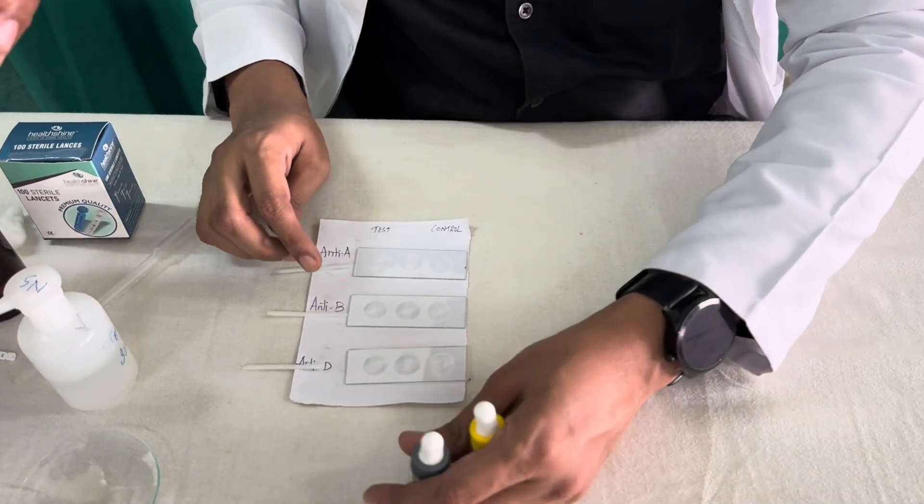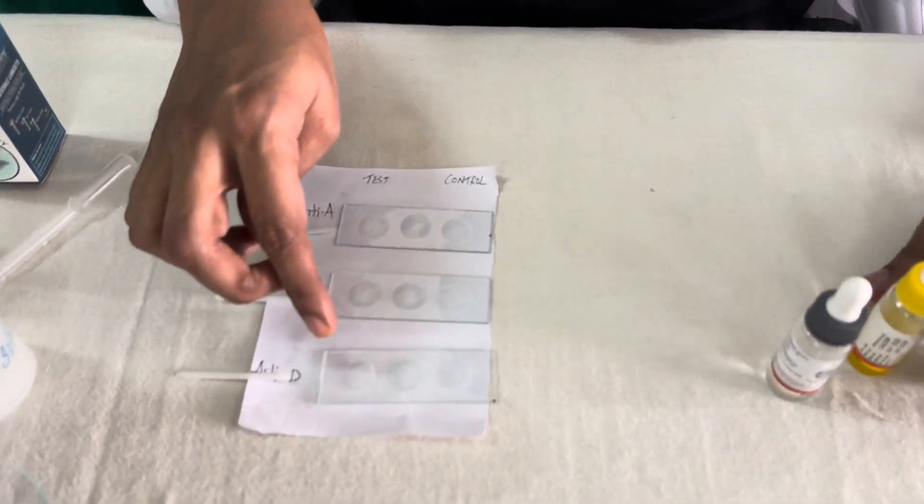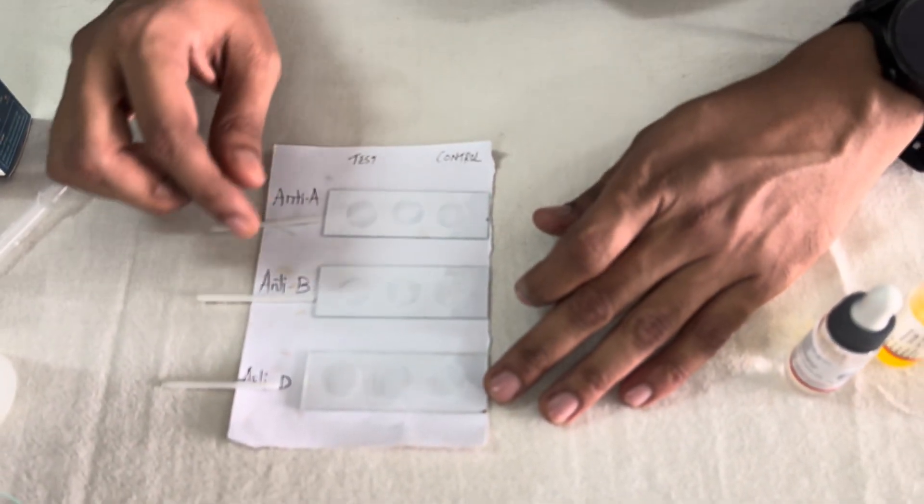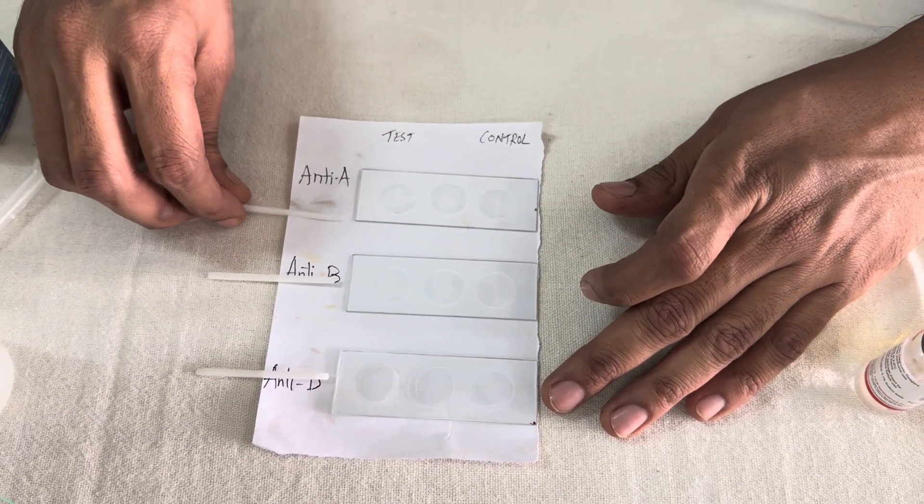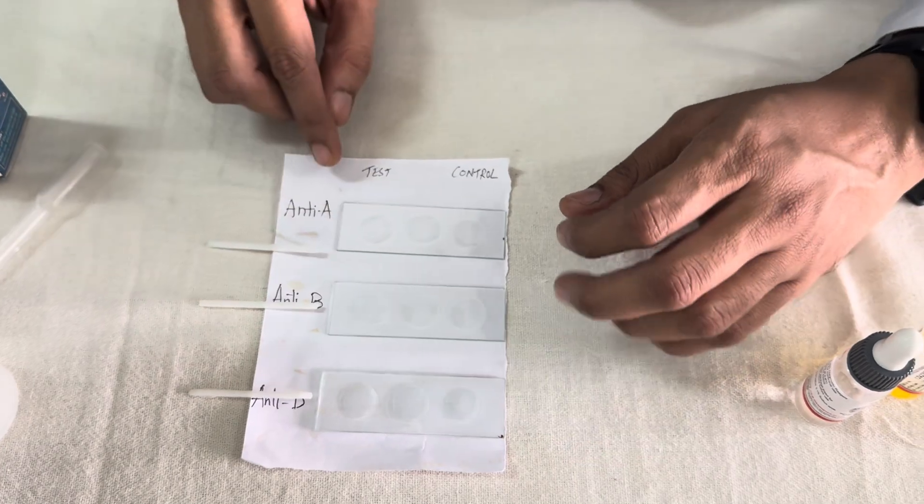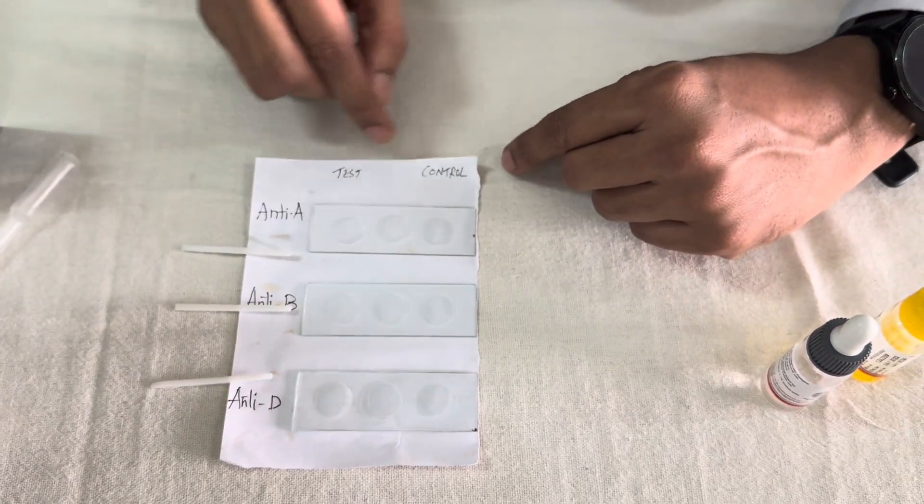First thing is, you have to take three slides. Generally these are blood group slides, but you can use even plain slides. And these three sticks, plastic sticks or even match sticks can be used. We have labeled as anti-A, anti-B and anti-D, and test and control.